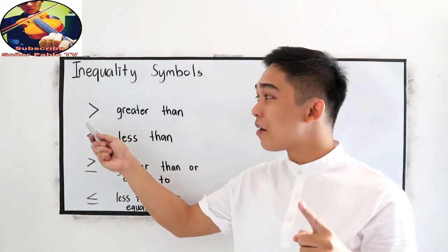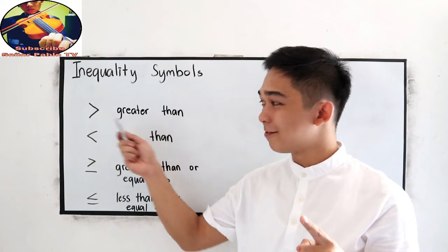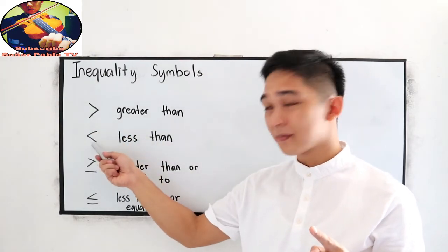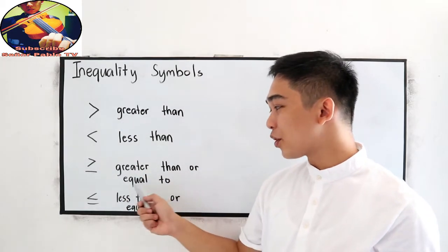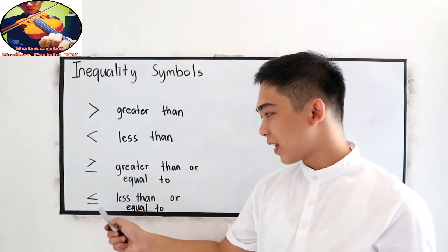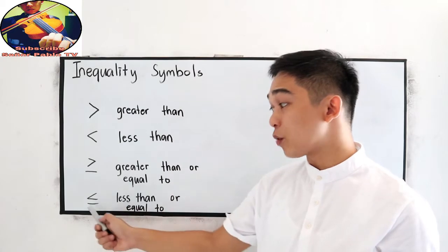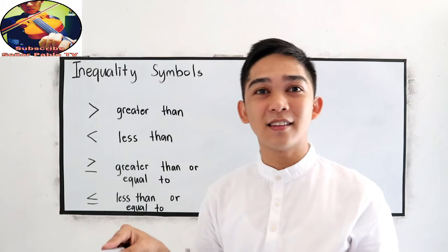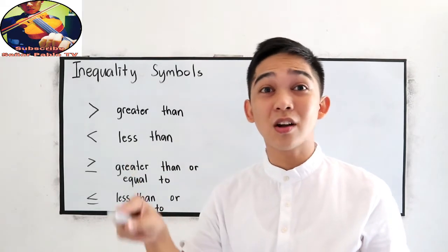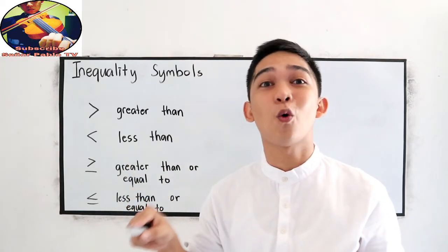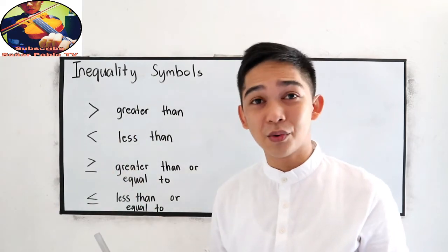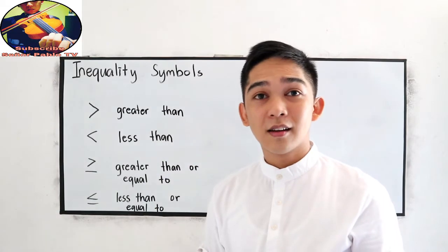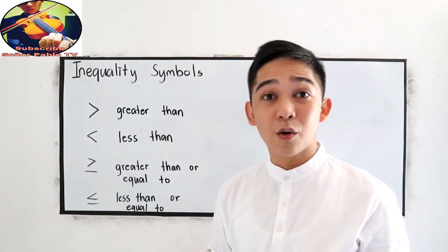First, we have the greater than symbol, the less than symbol, greater than or equal to, and less than or equal to symbol. For grade 11, you also have the rational inequalities. Watch this video and understand the different signs in our inequalities.